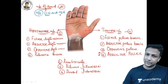Quick revision of all deformities: Partial claw hand → ulnar nerve. Complete claw hand → ulnar + median nerve. Wrist drop → radial nerve. Saturday Night Palsy → radial nerve. Card test → ulnar nerve (palmar interossei). Book test → ulnar nerve (Adductor Pollicis). Pointing index → median nerve. Hand of benediction → median nerve. Ape thumb deformity → median nerve.